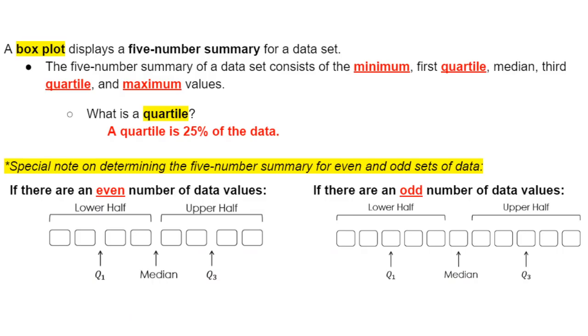That was just our little recap. We're going to go into our box plot info here. So you might be wondering what the heck's a box plot. A box plot displays a five-number summary for a data set. The five-number summary of a data set consists of the minimum, the first quartile, the median, the third quartile, and maximum values. What is a quartile? A quartile is 25% of the data. Quart, like quarter.